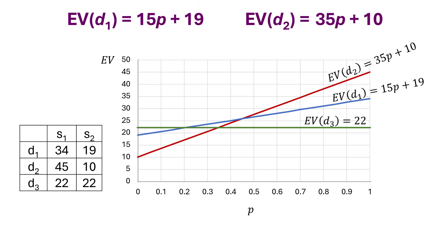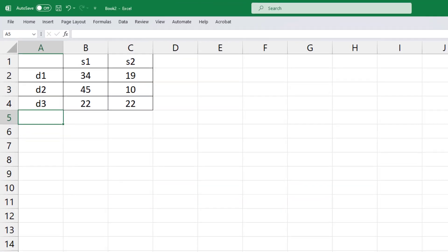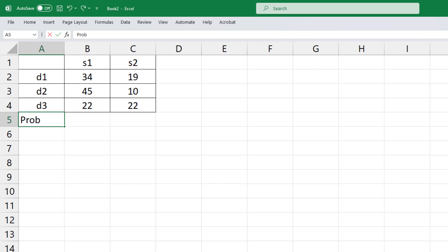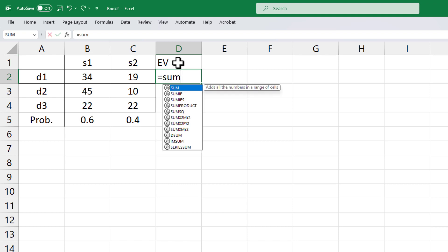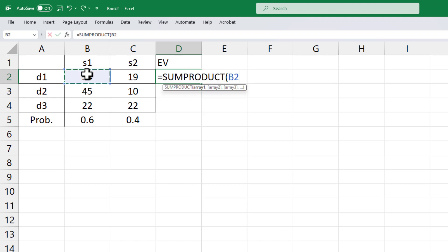We can generate these results using data table in Excel as follows. Suppose we use the same probabilities from the initial payoff table. That is, P equals 0.6 for S1, and I'm going to use 1 minus P for S2. For the expected values, I'll use equal sum product. Select the payoffs for D1, comma, then select the probabilities. I'm going to press F4 on PC to lock down the probabilities. And enter. Then grab the handle and drag down for D2 and D3.